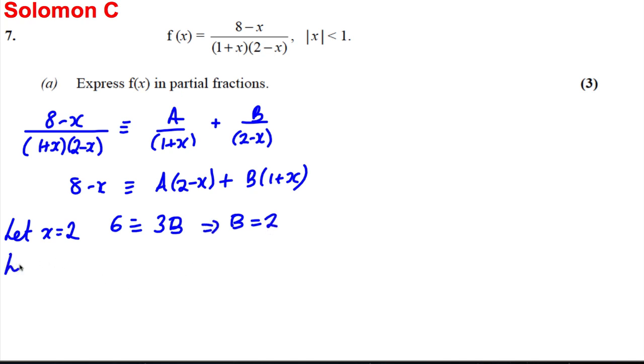And therefore let x now be negative 1. 8 subtract negative 1 is 9. 2 subtract negative 1 is 3, so we're going to get 3a. And therefore a is equal to 3. Expressing our f of x then in the correct form, f of x is therefore going to be equal to 3 over 1 plus x plus 2 over 2 subtract x. And we're done for 3 easy marks.